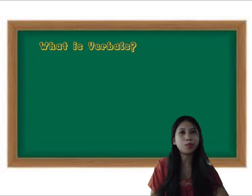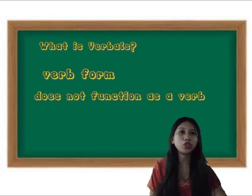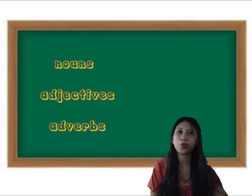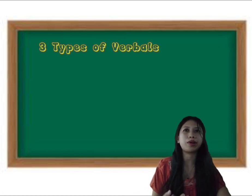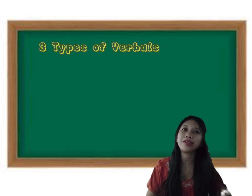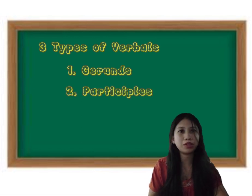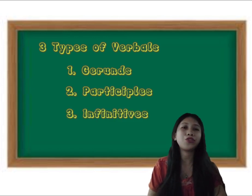So what is verbals? A verbal is a verb form that does not function as a verb. Verbal functions as nouns, adjectives, or adverbs. So there are three types of verbals: first is gerund, second, participles, and third is infinitives.